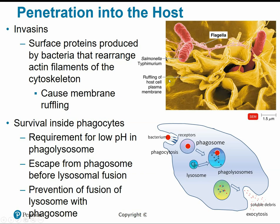Some pathogens can actually penetrate into the host cell cytoskeleton. They produce surface proteins called invasins that allow them to invade into the host cell by disrupting the cytoskeleton. This causes membrane ruffling — the cytoskeleton kind of ruffles and fluffs out the membrane, forming little openings and pockets where the bacteria can enter the cell.